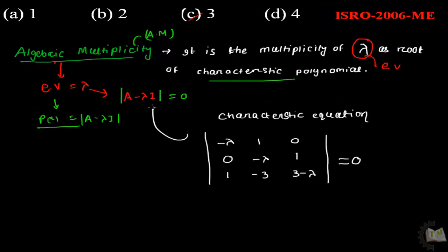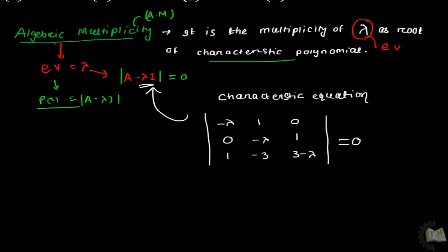To find the value of lambda, calculate the determinant. Minus lambda times the determinant of minus lambda, 1; minus 3, 3 minus lambda, minus 1 times the determinant of 0, 1; 1, 3 minus lambda, plus 0 times the determinant of 0, minus lambda; 1, minus 3.